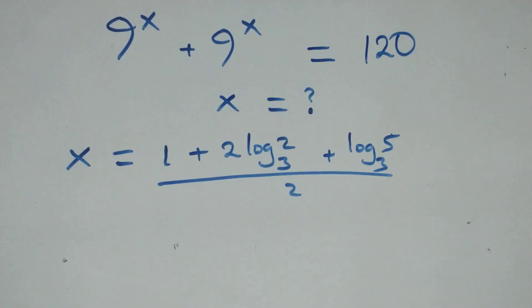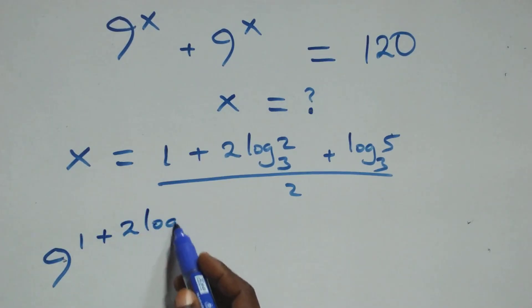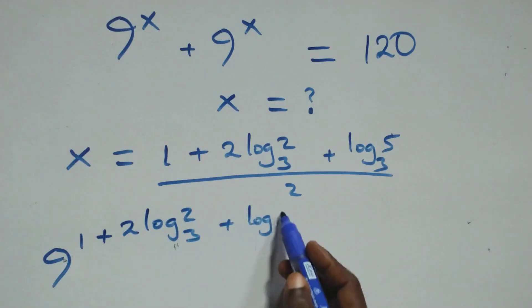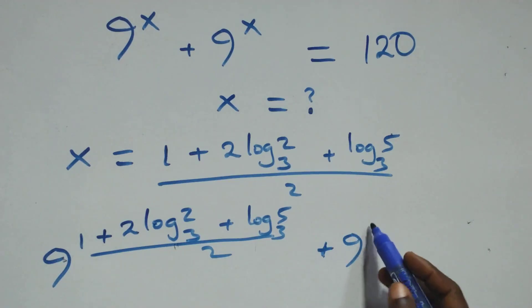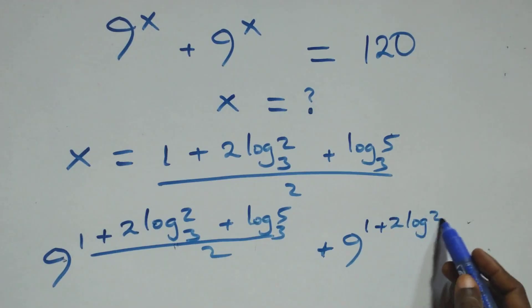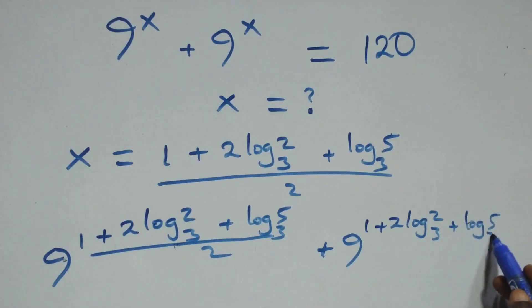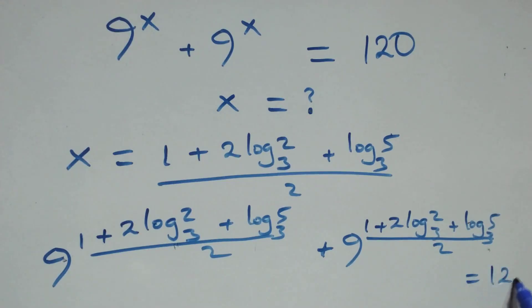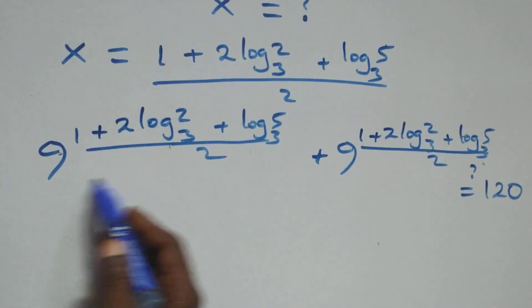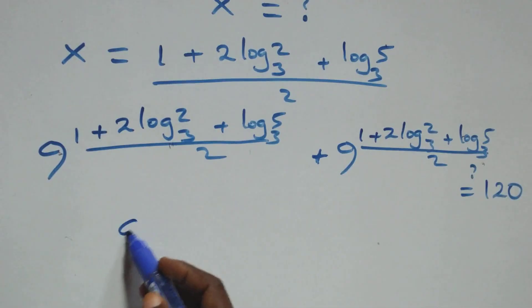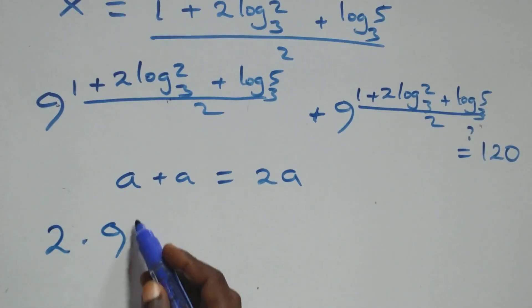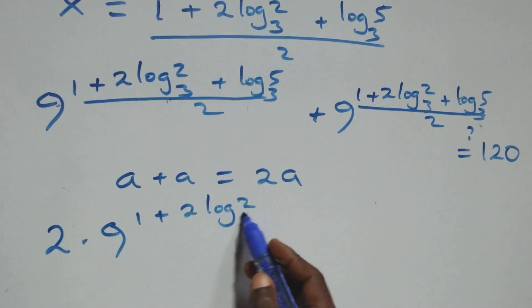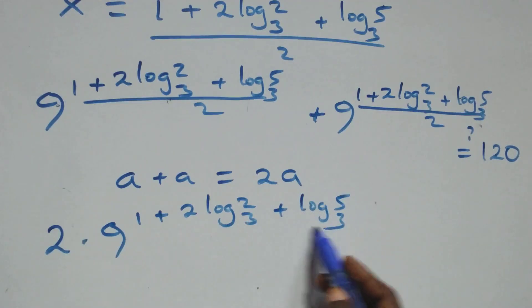Substituting into the original equation, we have 9 raised to the power (1 plus 2 log₃2 plus log₃5) all over 2, plus 9 raised to the power (1 plus 2 log₃2 plus log₃5) all over 2, which should equal 120. Since we're adding the same term twice, we can write this as 2 times 9 raised to the power (1 plus 2 log₃2 plus log₃5) all over 2.